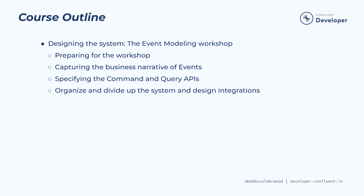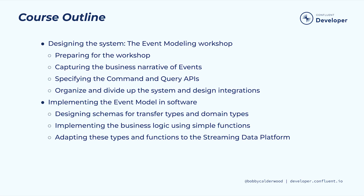Now that you know what event modeling is, as well as some of its benefits, I hope you'll follow along with the rest of the modules in this course. Throughout the course, we'll continue designing and implementing our autonomous vehicle ride-sharing system Autonomo. We'll begin by learning how to facilitate an event modeling workshop to collaboratively design the system with a team. We'll build our event model by capturing the business narrative of events and mapping this narrative to the user experience. We'll continue building out our event model by defining a command API to empower users to effect change in our system, and a query API to inform them about what's happening. Next, we'll organize and divide up the system while keeping the various parts integrated. Finally, we'll implement Autonomo using the Confluent Streaming Data Platform by designing transfer types and domain types for each model element, implementing the business logic of state changes and data flow using three simple functions, and implementing these types and functions using the streaming data platform's infrastructure and APIs.